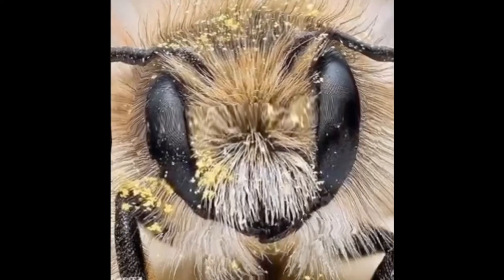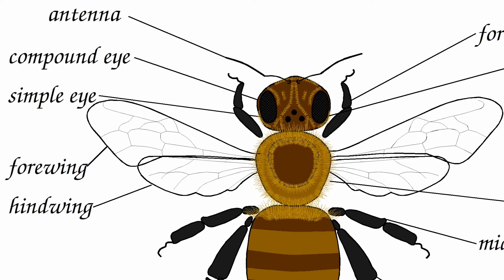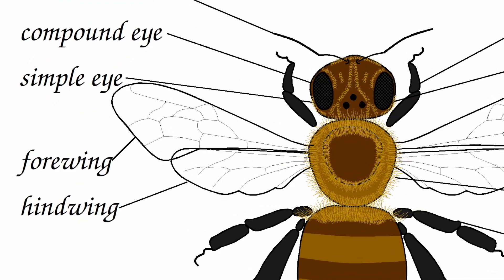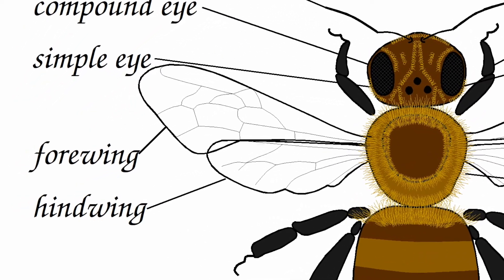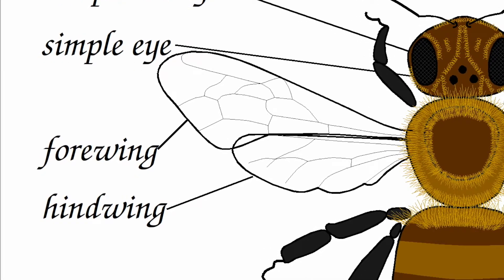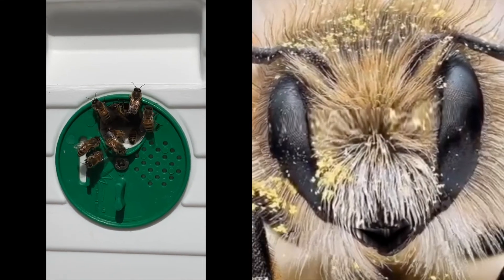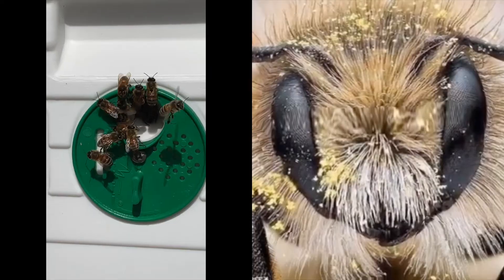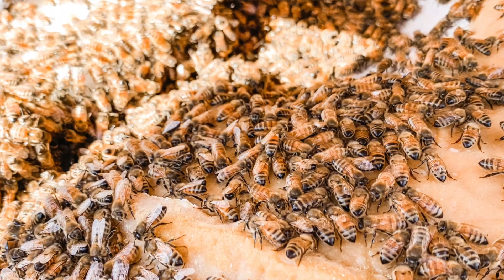We have two kinds of wings — fore wings and hind wings. Our fore wings are larger than our hind wings. We use our wings to fly and to help keep our hive cool, so we're kind of like air conditioners.